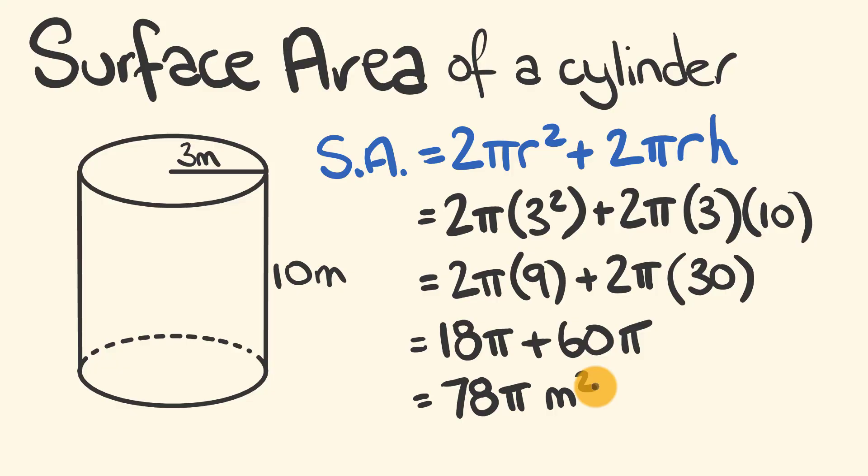Now this is equal to an approximation. If we use pi 3.1415 and so on, we multiply that by 78, we can say this is equal to approximately 245.04 meters squared. And that's how you go through and you can easily work out the surface area of a cylinder.